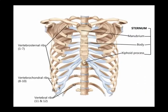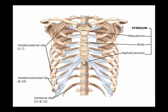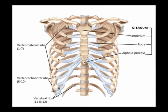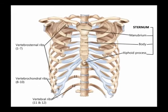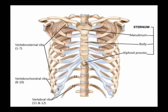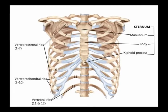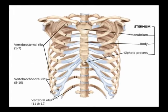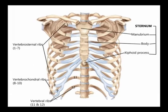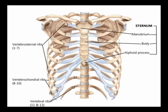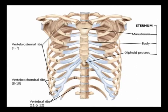Now ribs number eight through 12, those are the false ribs. Ribs number eight through 10 are known as the vertebral conjual ribs. They originate on the vertebrae and the ribs wrap around anteriorly and they attach to the sternum indirectly through the costal cartilage of the rib superior to it. So they are known as the vertebral conjual ribs because they do not attach directly to the sternum, but attach to it indirectly through the rib superior to it.